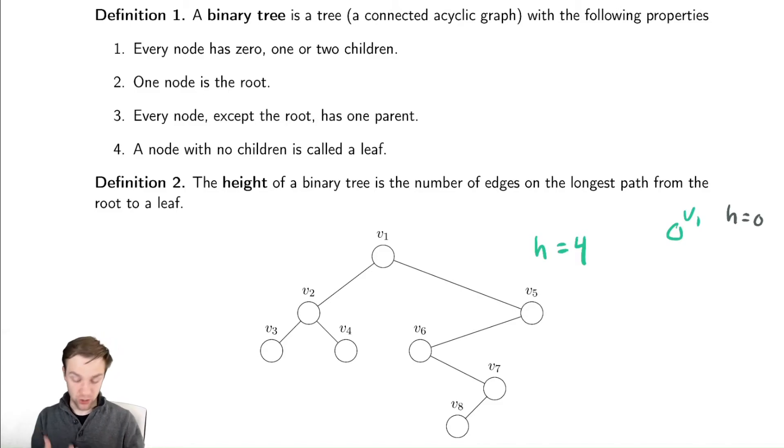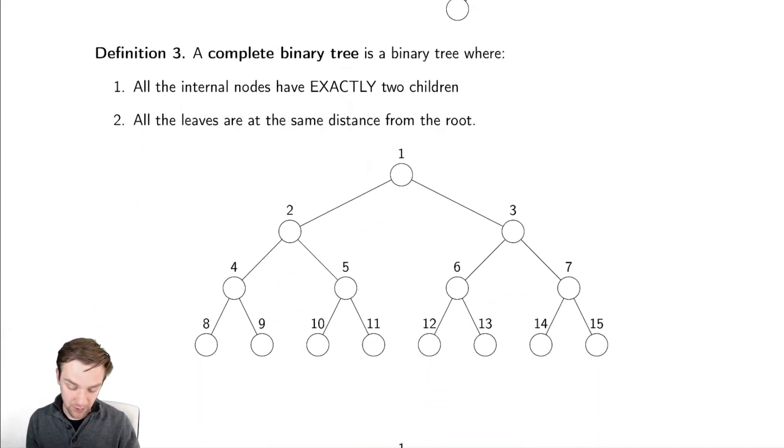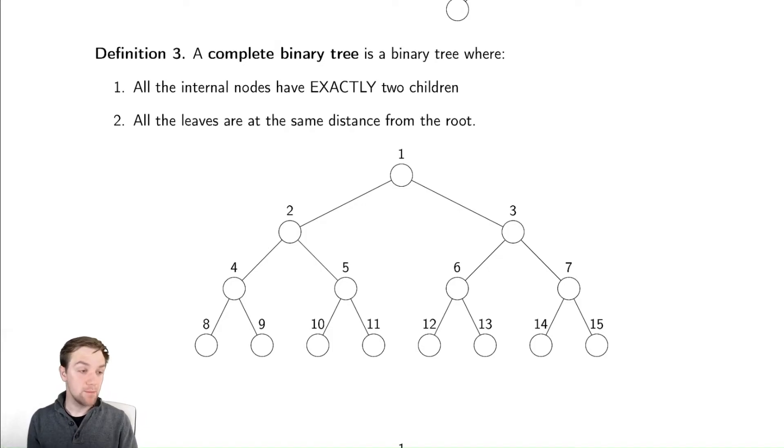So that's what a binary tree is. There is one different type of binary tree we've discussed already in our discussion of heaps, which is a complete binary tree. A complete binary tree has two properties, both of which are essential for making complete. The first one is that every internal node has exactly two children.